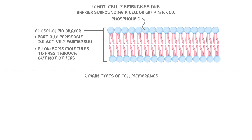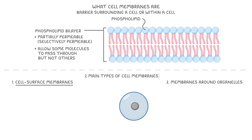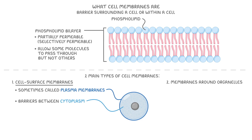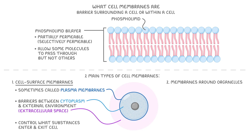There are two main types of cell membrane. Cell surface membranes, which are sometimes called plasma membranes, act like barriers between the cell cytoplasm and the external environment, which we call the extracellular space. They control what substances can enter and exit the cell, which helps the cell maintain a stable internal environment.